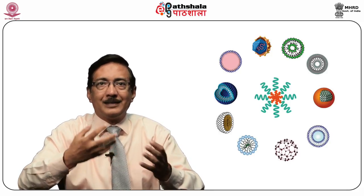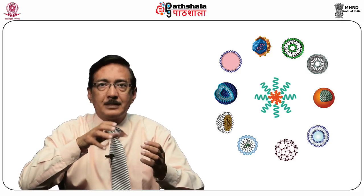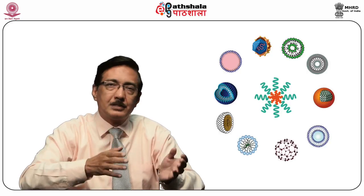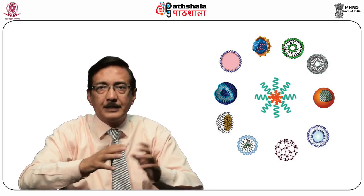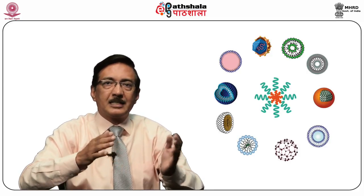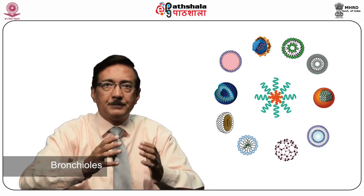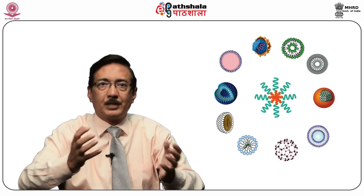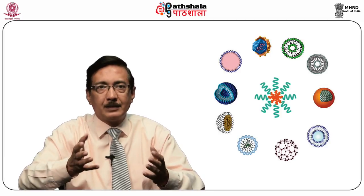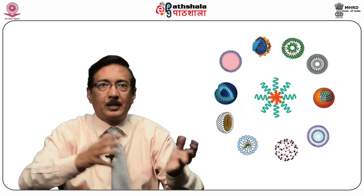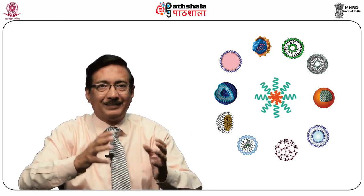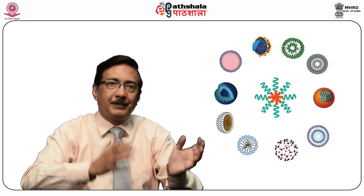Air entering through the nose and mouth passes the pharynx, larynx, trachea, and reaches the bronchi. The right bronchus further bifurcates into left and right bronchioles leading to the respective lungs. The bronchioles further branch into a tree-like structure known as alveoli — very thin-walled sacs where exchange of oxygen and carbon dioxide takes place. The lungs basically consist of two parts: the conducting airways and the respiratory region.